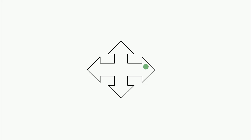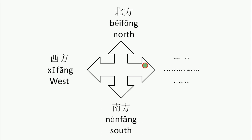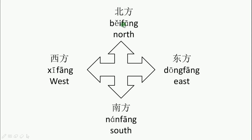北方 means the north, 南方 means south, 西方 means west, 东方 means east. 方 stands for direction, so it literally means the north direction, east direction, south direction, and west direction.